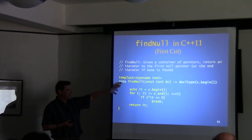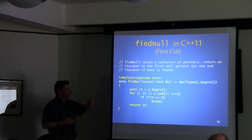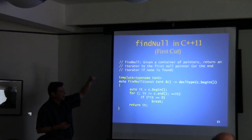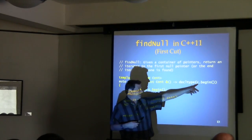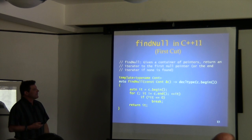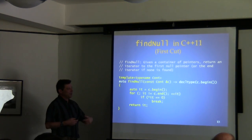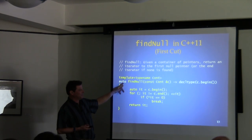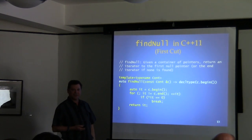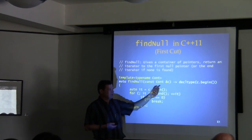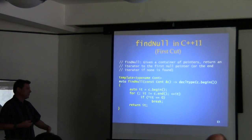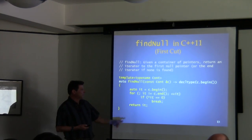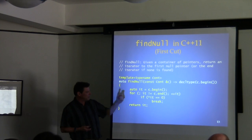Here's a rewrite of the `findNull` function template in C++11 applying `auto` and trailing return type. What are we returning? An iterator. So we pick something that has the iterator type — `c.begin()`. As a quick sanity check: because `c` is a const container, calling `begin()` on it yields a `const_iterator`. We go through and do the same iteration logic as before, but now with `auto`.